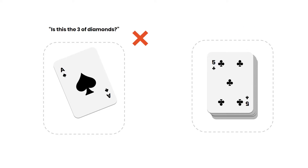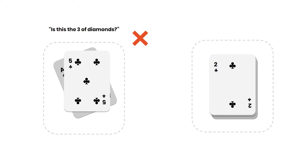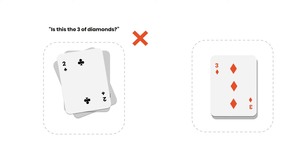First, we create two piles: a searched pile and an unsearched pile. Then we go through each card starting at the beginning, checking each one by one to see if it is the three of diamonds. For each card pulled from the top of the deck we ask: is this the three of diamonds? We pulled the ace of spades — it's not — so we continue to the next card.